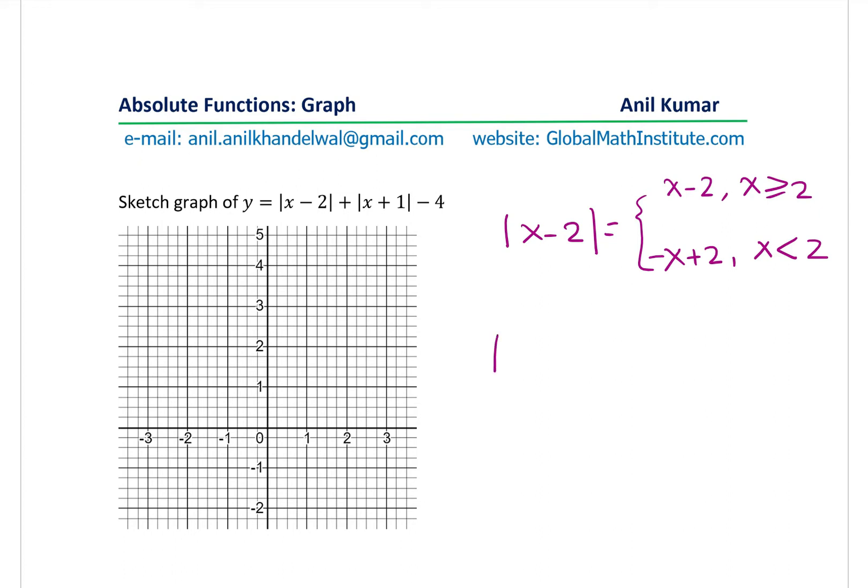Similarly, we can also write the absolute value of x plus 1 as equal to absolute value of x plus 1 when x is greater than or equal to what? Write it down. And the negative of this value when x is less than that value which makes this 0, which is minus 1. The constant minus 4 remains as minus 4.